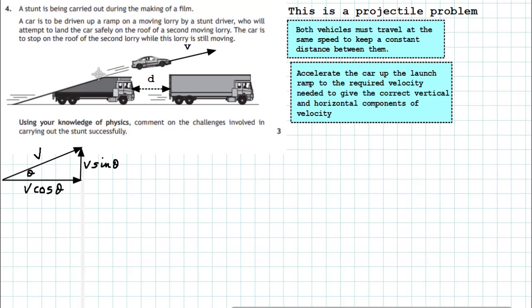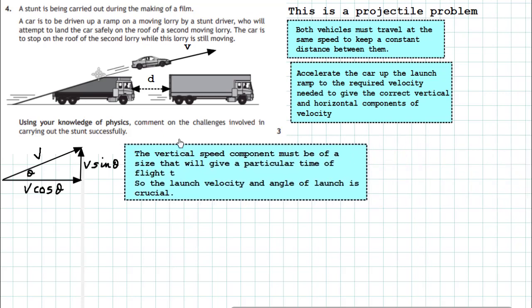Now the other challenge is that you must accelerate that car to that required velocity so that when the components break down, the vertical speed component must be of a size that will give a particular time of flight t. You want it to be in the air for a certain amount of time, and that comes from your vertical component. So the launch velocity and the angle of launch are crucial in this particular problem.